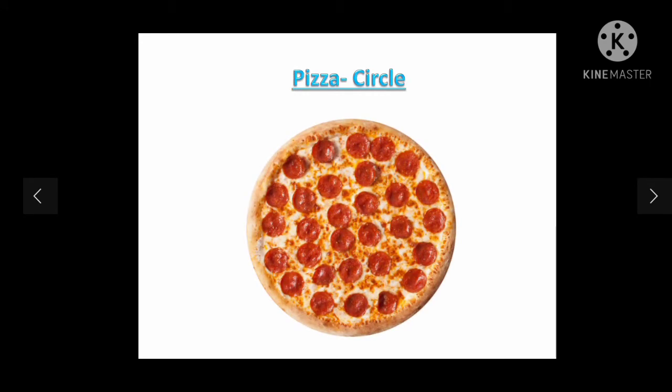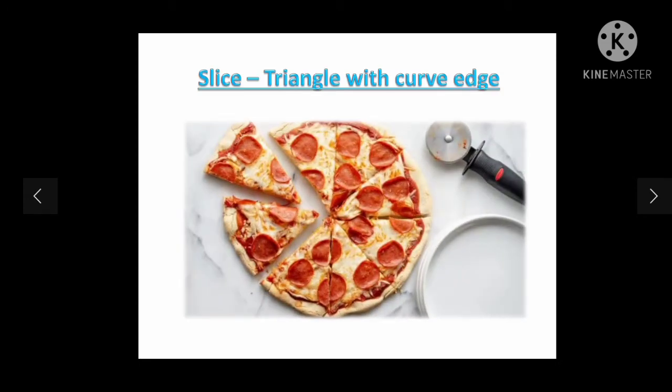Now, do we eat it like this? No, we cut it into slices and that slice becomes our shape - that is a triangle. So, see how the box is a different shape, then the pizza is different shape, and then it comes in the triangle. How is it done? Because we know the concept of shapes.